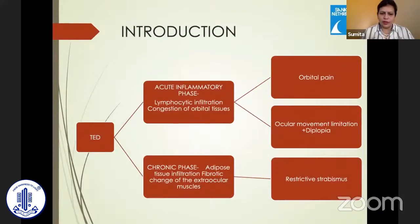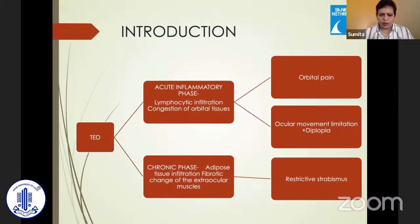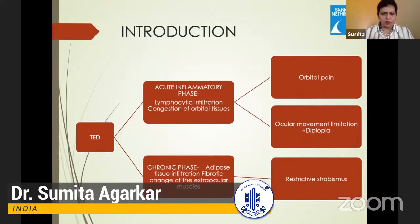Thyroid eye disease basically has two clear phases. There is an acute inflammatory phase with lymphocytic infiltration and congestion of the orbital tissue, which if the patient presents at that time can have pain, ocular movement restriction and diplopia. It then leads to a chronic phase with adipose tissue infiltration and fibrotic changes of the ocular muscles, leading to restrictive strabismus.